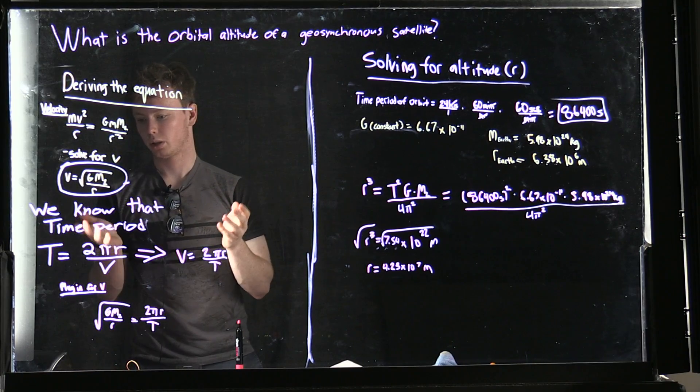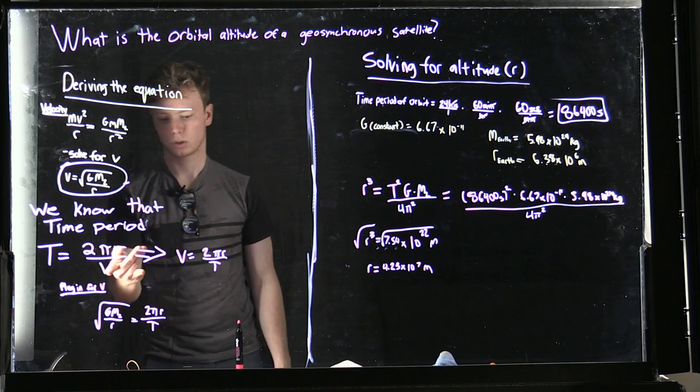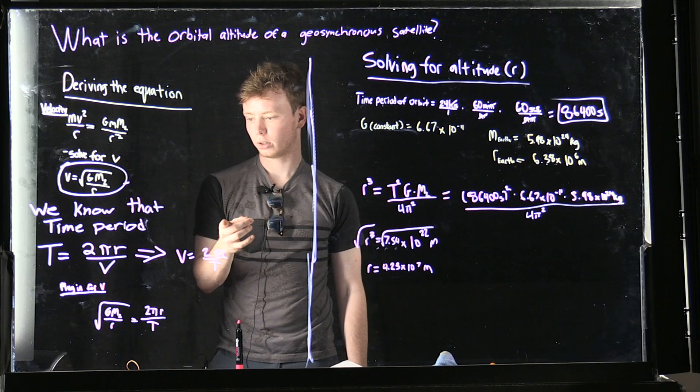Next, we're going to use the equation for a time period. We know that the time period T is equal to 2πr over V. We're going to switch the V and the T. We're going to get V equals 2πr over T.